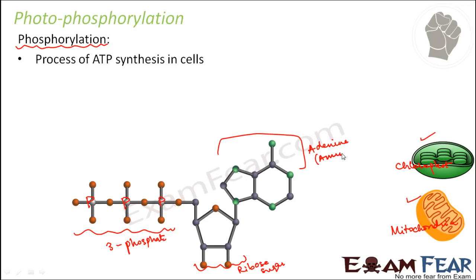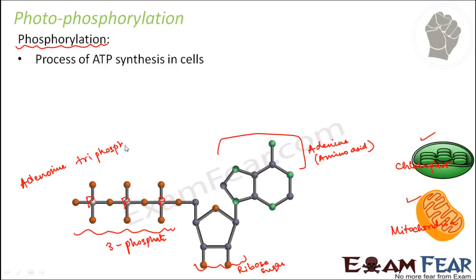This part is a ribose sugar, and this part is adenine. You remember when we spoke about the biomolecules we talked about all these different components. Three phosphate groups when joined to a ribose sugar and an adenine forms the adenosine triphosphate.